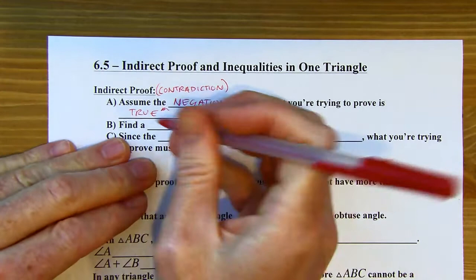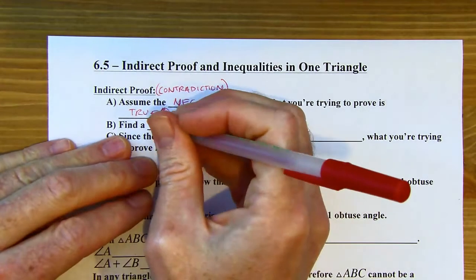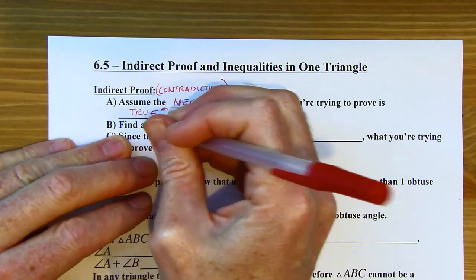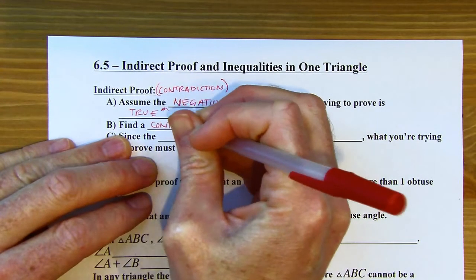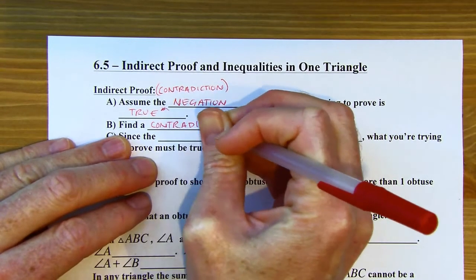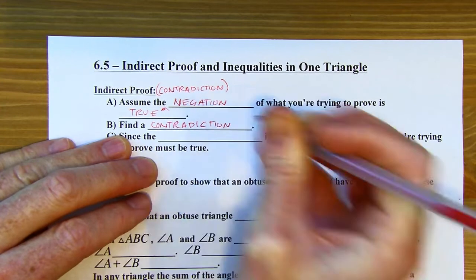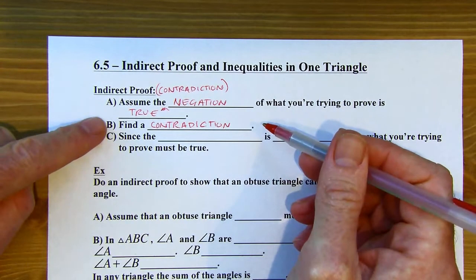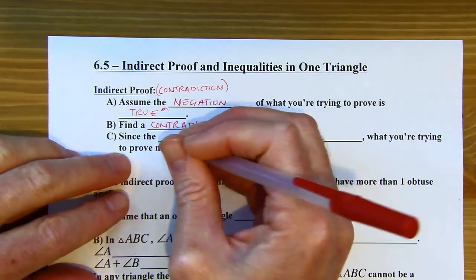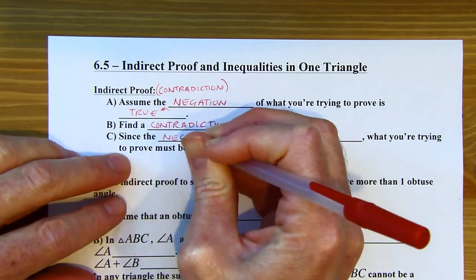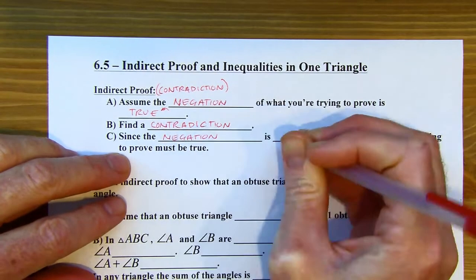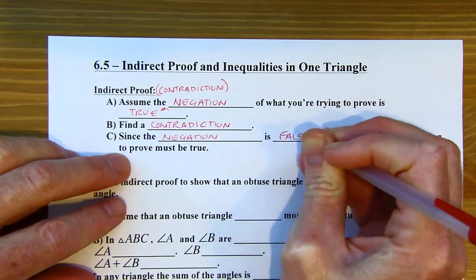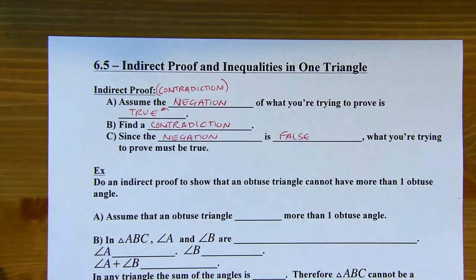Then we're going to find a contradiction — that's why it's called a proof by contradiction. I'm going to show that the negation being true doesn't work somehow. And then since the negation is false, what you're trying to prove must be true. The original statement must be true because they have opposite truth values.